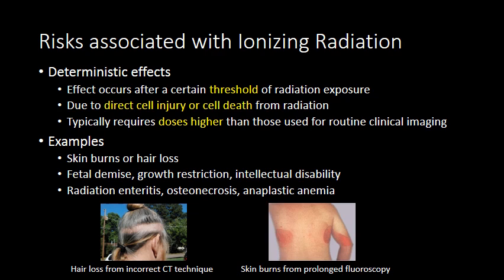The first category is deterministic effects. These are effects that typically occur when a certain threshold of very high radiation is reached. In deterministic effects, the ionizing radiation has caused cellular death or cellular injury from extensive DNA damage. Most of the time, deterministic effects occur at radiation doses much higher than those seen in routine clinical imaging. So if the CT scanner malfunctions or an improper protocol is designed, you may see skin burns or hair loss.